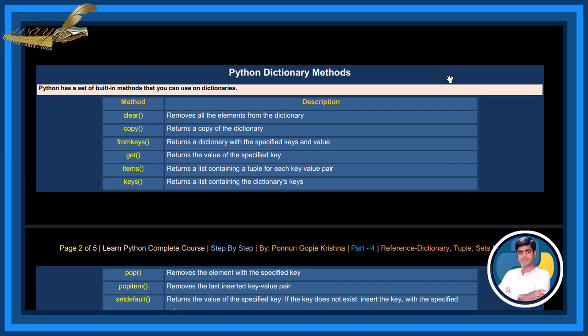Clear Method removes all the elements from the dictionary. Copy Method returns a copy of the dictionary. From Keys Method returns a dictionary with the specified keys and values. Get Method returns the value of the specified key.